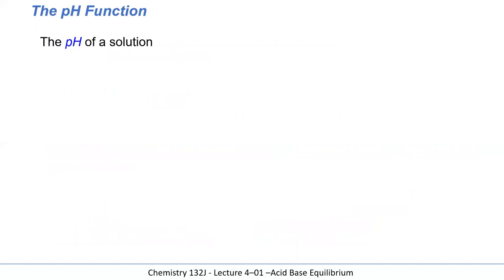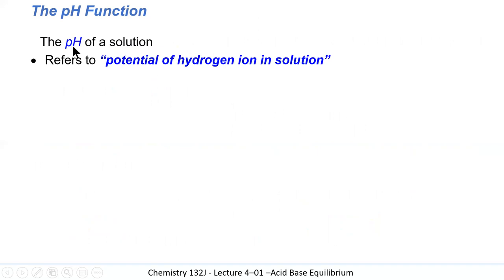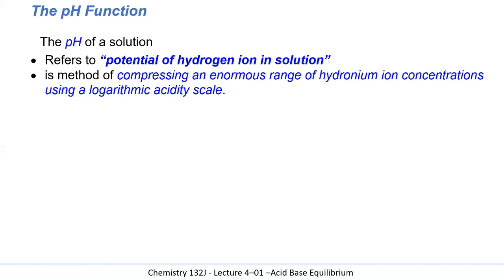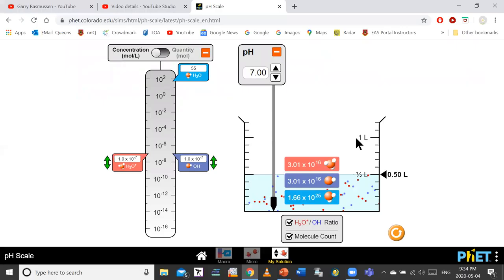The pH function is a number we use to indicate the level of acidity and basicity of an aqueous solution. Many people refer to pH as the potential or potency of hydrogen ion in solution. It compresses an enormous range of hydronium ion concentrations using a logarithmic scale. The pH equals the negative log of the hydronium ion concentration. For a solution at pH 7, the hydronium ion concentration is 1×10⁻⁷ mol/L and hydroxide is 1×10⁻⁷ mol/L. Those numbers are complicated, so the simpler pH scale was created.